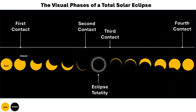During a total solar eclipse, observers witness distinct visual phases as depicted in the diagram. First contact occurs when the moon's edge makes initial contact with the sun's edge, creating a tangential alignment. Second contact, beginning with phenomena like Bailey's beads, caused by sunlight shining through the moon's valleys, and the diamond ring effect, marks the gradual covering of almost the entire solar disk by the moon.